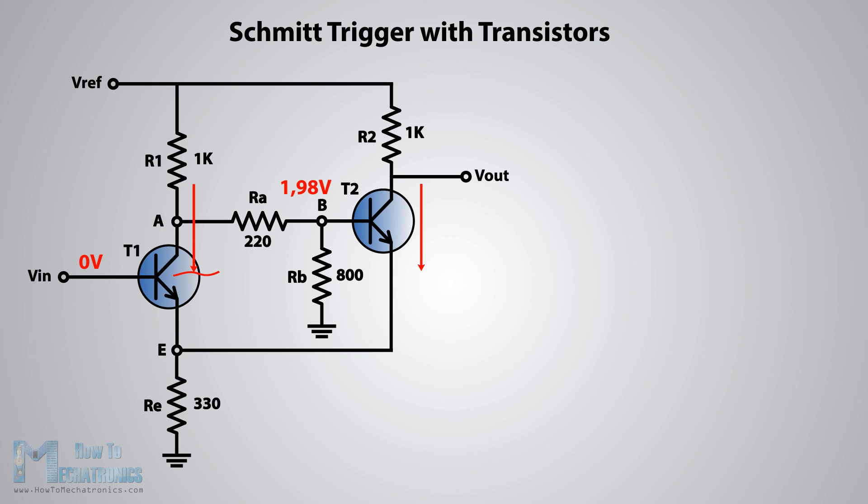So because the transistor T2 is conducting, the output voltage will be low and the voltage at the emitter will be about 0.7 volts lower than the voltage at the base of the transistor, or that's about 1.28 volts. The emitter of transistor T1 is connected with the emitter of transistor T2 so they are at the same voltage level of 1.28 volts, which means that transistor T1 will turn on when the voltage VIN at its base will be 0.7 volts above this value of 1.28 volts, or that's about 1.98 volts.